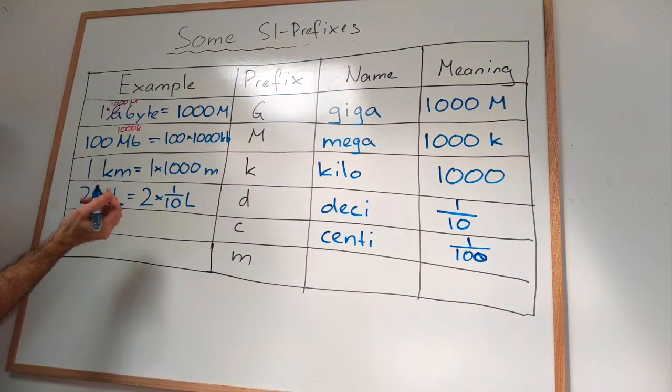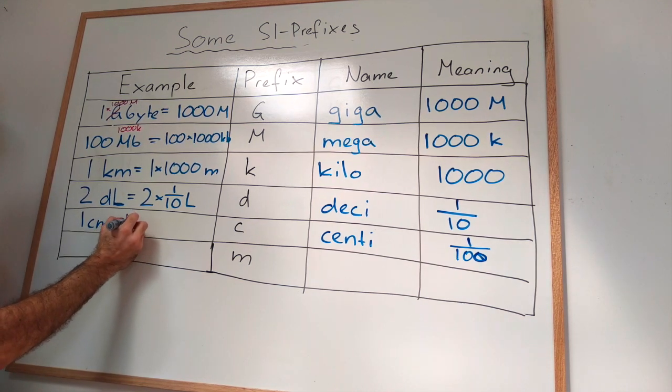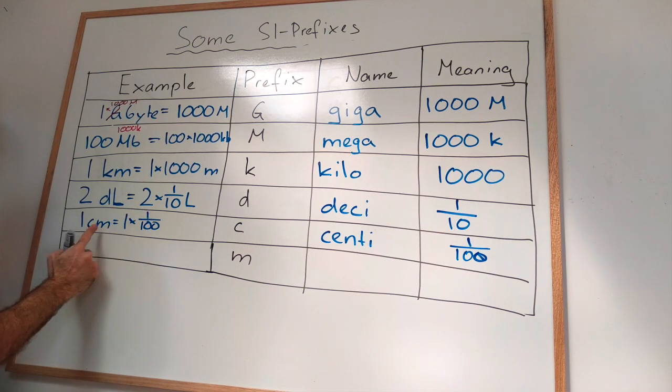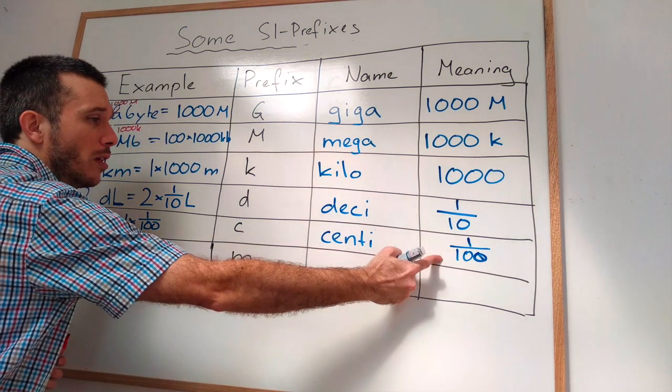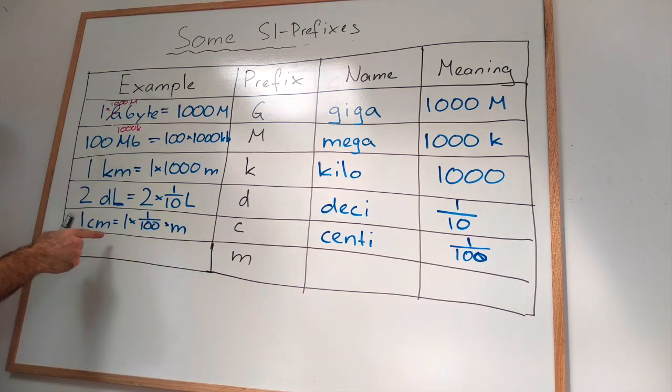So let's go with the centimeters. So what is a centimeter? A centimeter is literally one times one over 100. Sorry, I'm replacing the C with its equivalence, the one over 100 meter. So 0.01 meter is one centimeter.